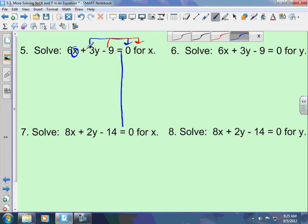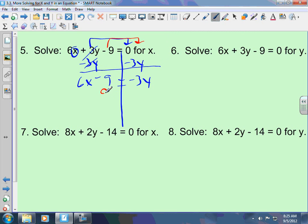So, we're going to move the positive 3y by subtracting 3y to both sides. 3y minus 3y is 0, leaving me 6x minus 9 equals 0 minus 3y is minus 3y. Now, negative 9, how do I move it to the other side? I add 9 to both sides. 9 minus 9 is 0. It cancels out.